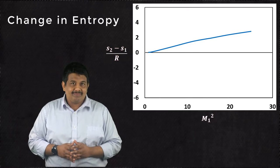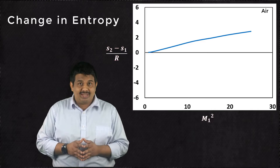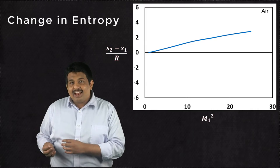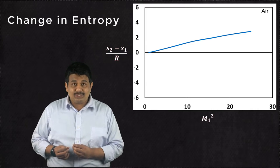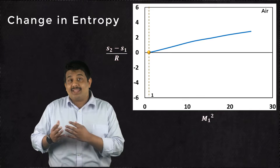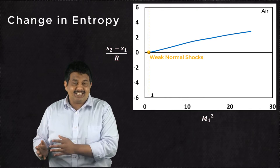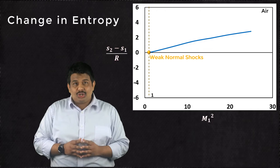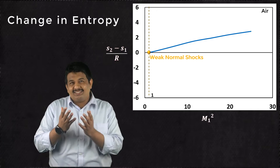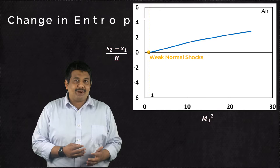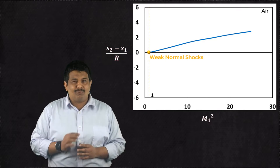This plot is for air. As M1 square tends to 1, the value of S2-S1 approaches 0. That is, the shock is nearly isentropic. Such shocks are generally referred to as weak normal shocks and the change in pressure across the shock wave is small.